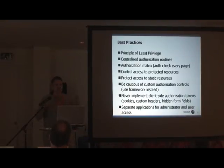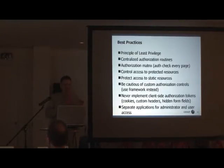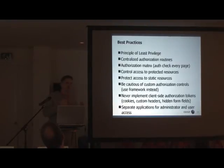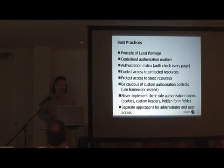An authorization matrix simply defines which users are allowed to see a given page and what actions they're allowed to perform on it. For example, a normal user can view a blog, but a blog owner can view and edit it. You want to make sure that on every page, you run this check through the authorization matrix so you know who the authenticated person is and what authorization they have on that page.